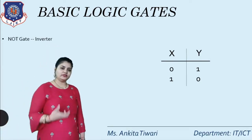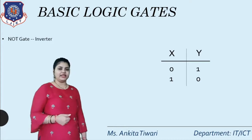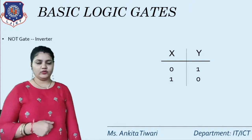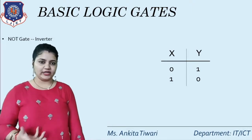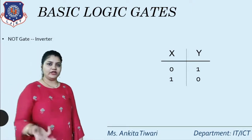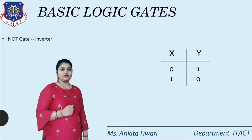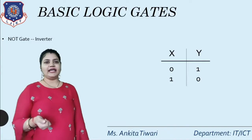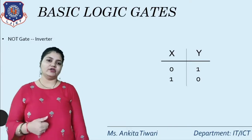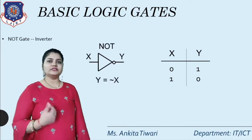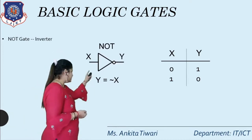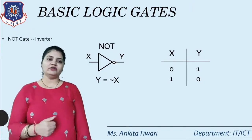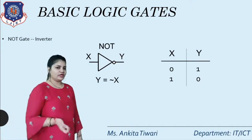Suppose the input is X and we will get output as Y. X will have two inputs: 0 and 1. NOT will invert the value — negate it. If X is 0, output Y will be 1. If X is 1, output Y will be 0. The symbolic notation uses a bubble in front of the buffer gate, and the equation is Y = X̄.